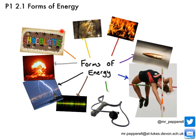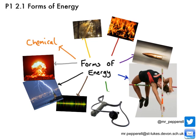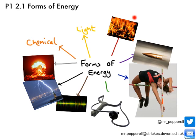First we're going to think about chemical energy. Chemical energy is energy that is stored up inside fuels — and our fuel is the food we eat — and that energy can be liberated when chemical reactions take place. Next we've got light energy, which is energy being transferred in the form of radiation. Sometimes it's called radiant energy but more commonly it's called light energy. We've also got heat energy, which is a measure of how fast an object's particles are moving — that's how much energy they've got.